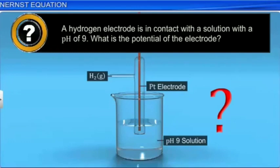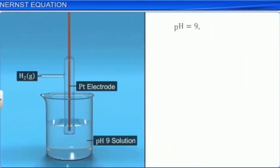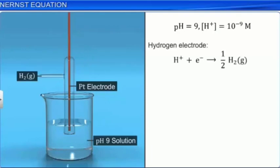Let's work through this problem together. We'll start by listing what we know. Since we are told the pH is 9, the hydrogen ion concentration is 10 to the power of minus 9 molar. The equation for the hydrogen electrode is H plus plus 1 electron makes 1 half hydrogen gas. We'll assume that the pressure of hydrogen is held at 1 atmosphere.